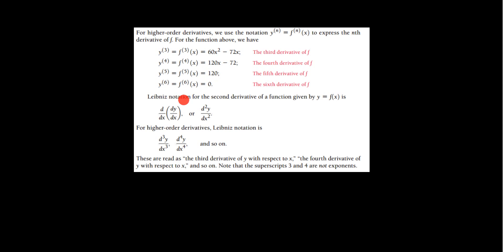The Leibniz notation for the second derivative of y = f(x) is the derivative of the derivative. d/dx is the notation saying 'take the derivative of this,' and dy/dx is the derivative of the function y with respect to the variable x. More succinctly, the second derivative is written d²y/dx². For higher order derivatives, we do the same thing depending on what order we're on — these are read as the third derivative of y with respect to x, the fourth derivative of y with respect to x, and so on.